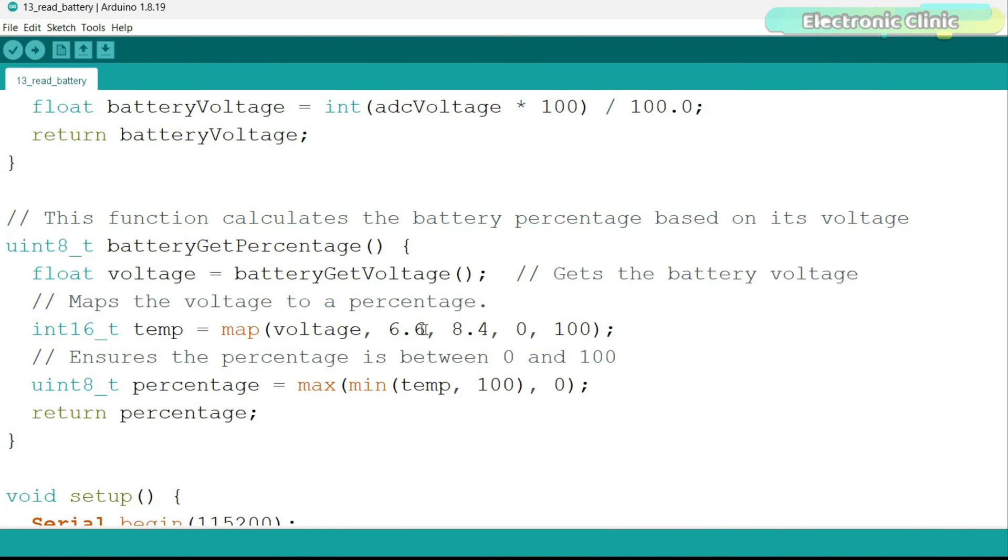6.6 is the minimum battery voltage when it's fully discharged and 8.4 is the maximum battery voltage when the battery is fully charged. This line of code ensures that the variable percentage is within the range of 0 to 100.